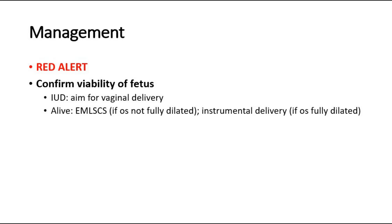To manage cord prolapse, first it is a red alert — an emergency situation. We should first confirm the viability of the fetus. If the fetus is dead, where there is intrauterine death, we aim for vaginal delivery. If it is still alive, it depends on whether the os is fully dilated or not. If fully dilated, we can aim for instrumental delivery. If not fully dilated, we proceed with emergency caesarean section.